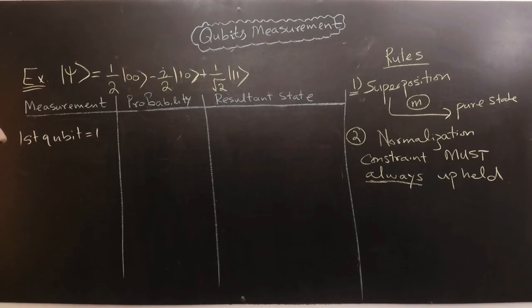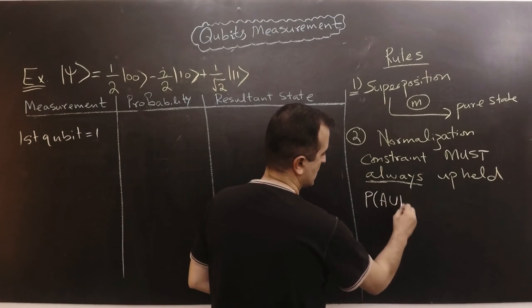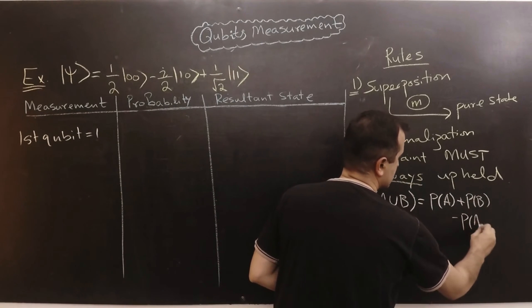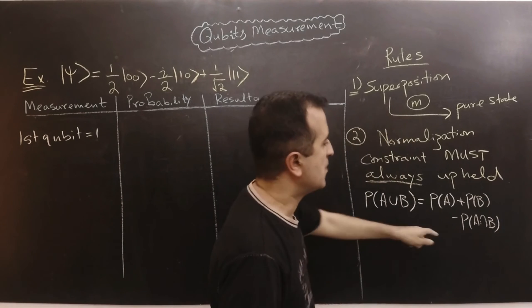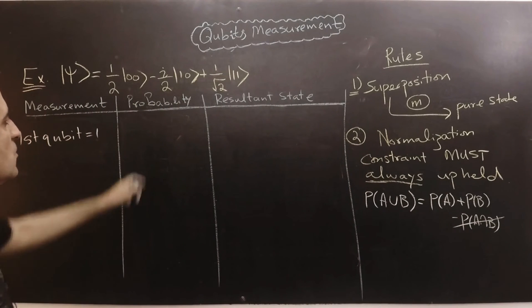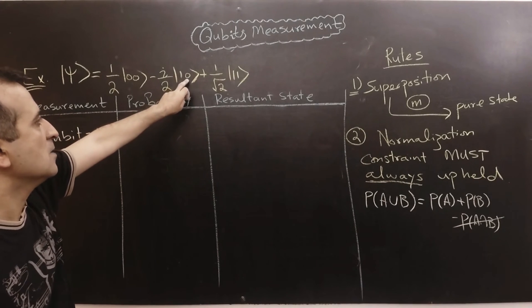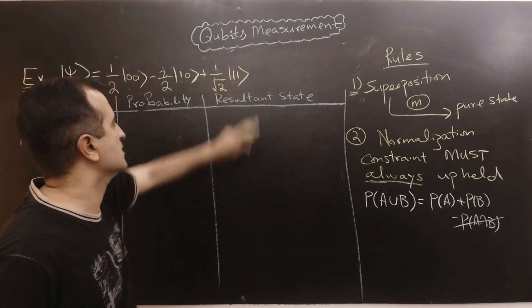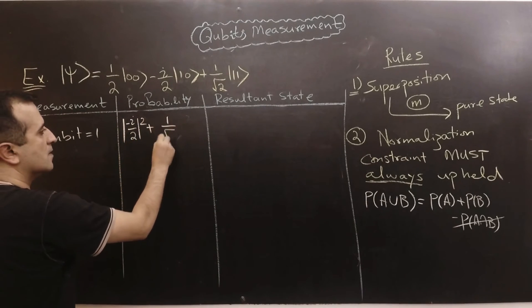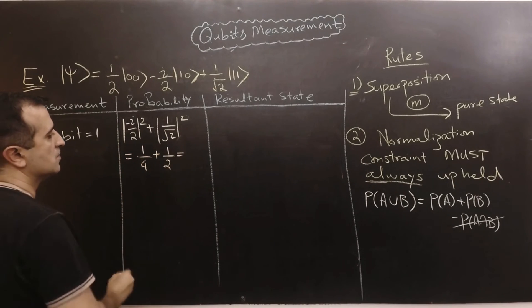The probability that the first qubit equals one can be found using the probability union rule: P(A∪B) = P(A) + P(B), since A and B are disjoint. So the probability that the first qubit is one equals the sum of the probability that the first qubit is one and the second is zero, plus the probability that both are one. The answer is 1/4 + 1/2 = 3/4.